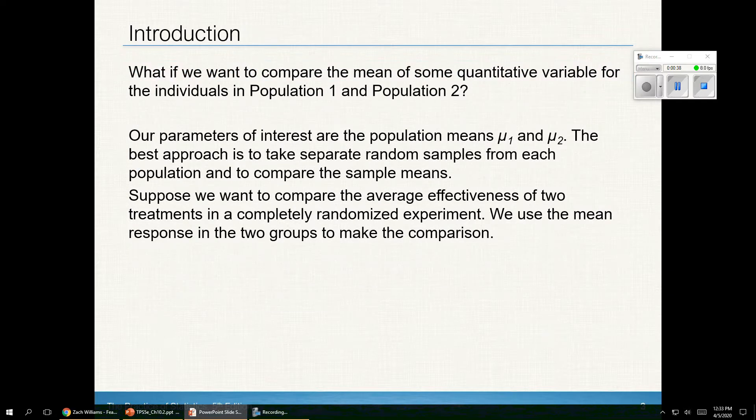So what if we want to compare the mean of some quantitative variable for individuals in Population 1 and Population 2? The parameters of interest are μ₁ and μ₂, and our best approach would be to take simple random samples from each population and compare those x-bars.